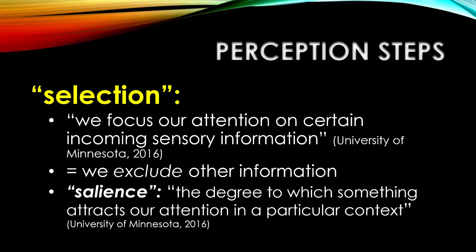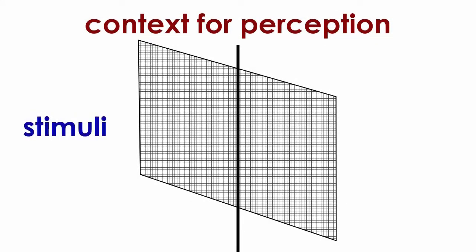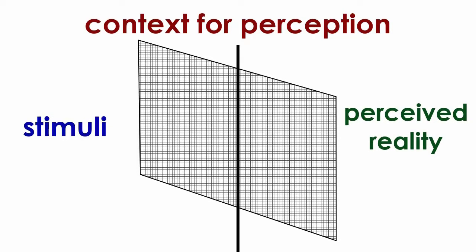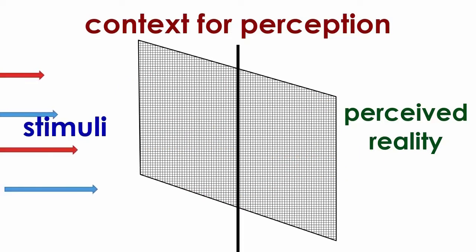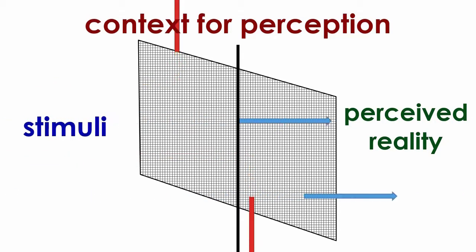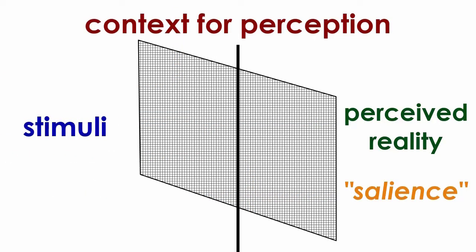So how does this process work when we're perceiving something new? The selection stage of perception really depends on the context we find ourselves in — you can think of this almost as a reality screen. On one side of the screen are the stimuli trying to get our attention, and on the other side, the reality we end up perceiving. This context involves variables such as the environment we find ourselves in, the situation we're faced with, what sensory stimulation we find interesting, the needs and interests we have at that moment, and our expectations. Our mind makes principled choices: the screen lets through the elements of stimuli we find salient, and deflects the others.